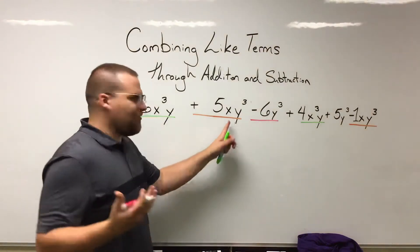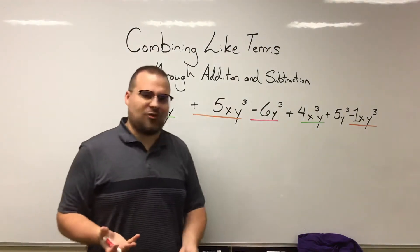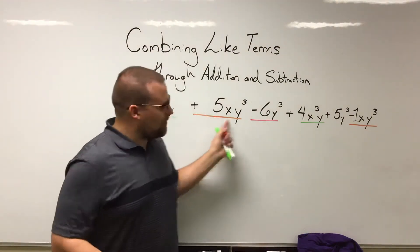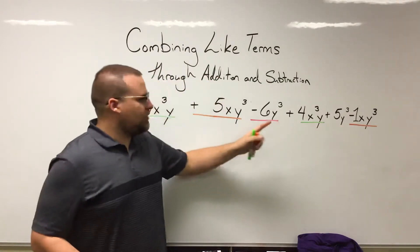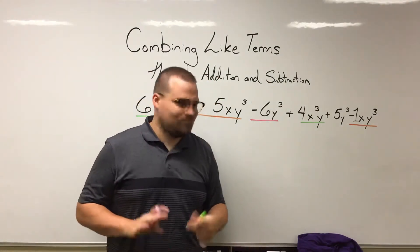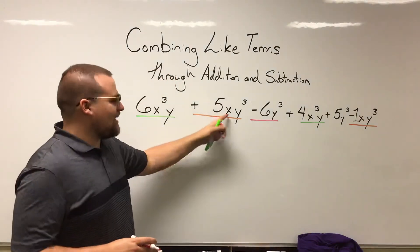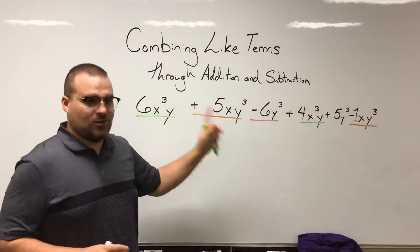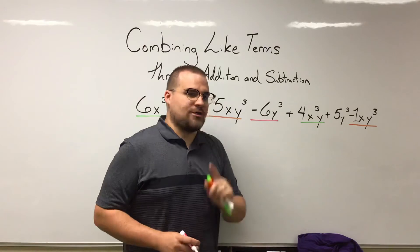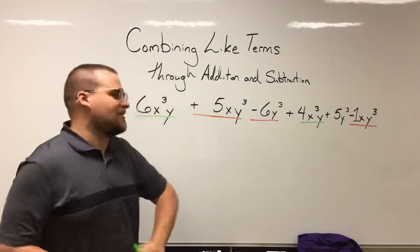Would that be able to combine with this one because there's also a Y³ there? We already highlighted these two in orange—they have Y³. Should this one be orange too? No, because this has that X¹, and remember that variable configuration has to be exact, not just a part of it matching.